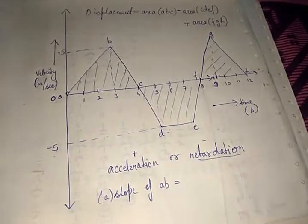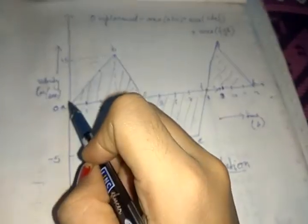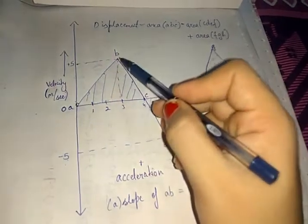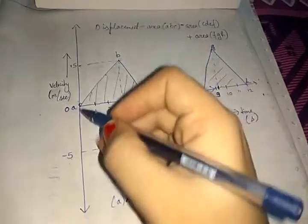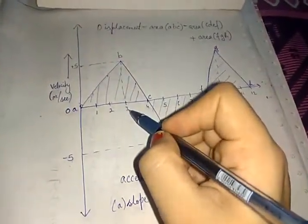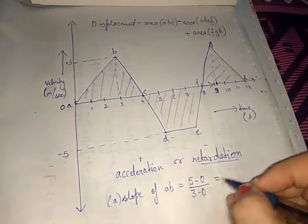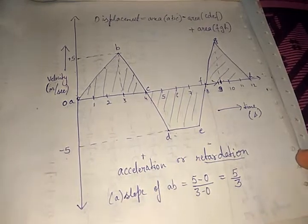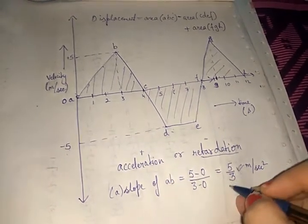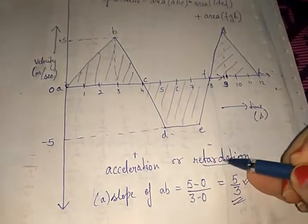Acceleration equals the slope of AB, which is change in velocity divided by change in time: final velocity minus initial velocity over final time minus initial time. At point B the velocity is 5 and at point A it is 0, so that's 5 minus 0. At point B the time is 3 and at point A it is 0, so it's 3 minus 0. The acceleration is 5/3 meters per second squared.